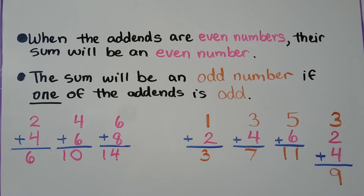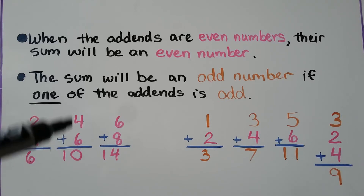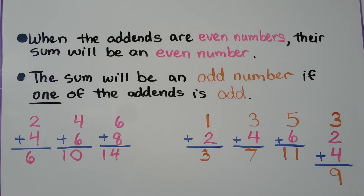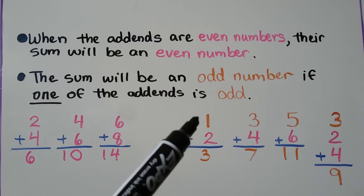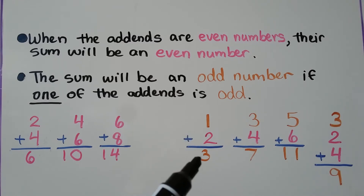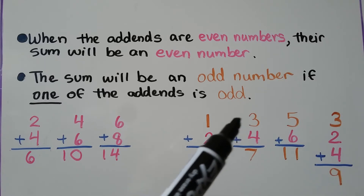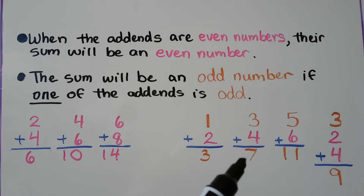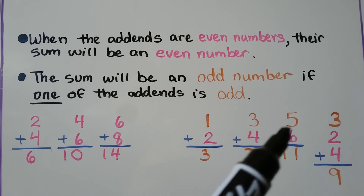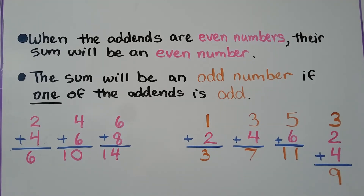When the addends are even numbers, their sum will be an even number. Here we're adding 2 and 4 — both even — and the sum is even: it's 6. Here we're adding 4 and 6, and the sum is even: it's 10. We're adding 6 and 8, and our sum is even: it's 14. But the sum will be an odd number if one of the addends is odd. We have 1 odd and 1 even — a 1 and a 2 — and our sum is odd: 3. You can get scratch paper and try adding even and odd numbers, or all even or all odd, and see what you get. But if you have 1 odd number, the sum will be odd.